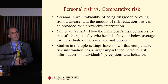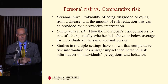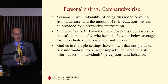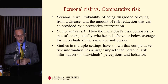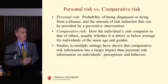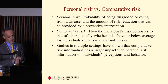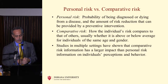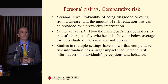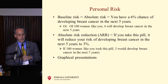For this talk, I have to distinguish between personal risk and comparative risk. Personal risk is the probability of being diagnosed or dying from a disease and the amount of risk reduction that can be provided by a preventive intervention. Comparative risk is how the individual's risk compares to that of others — usually whether it's above or below the average for people of that gender and age. Studies in multiple settings have shown that comparative risk information has a larger impact on risk perception and risk behavior than just the straight personal risk numbers.